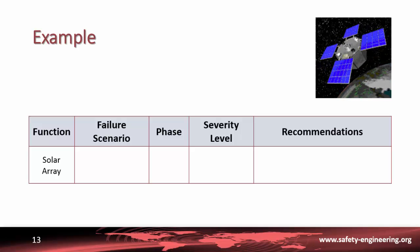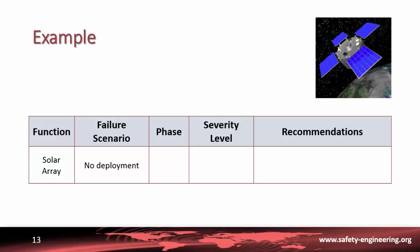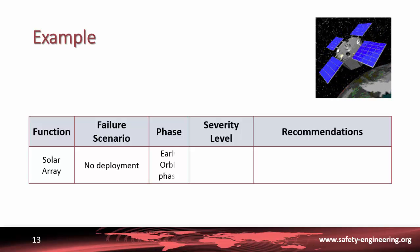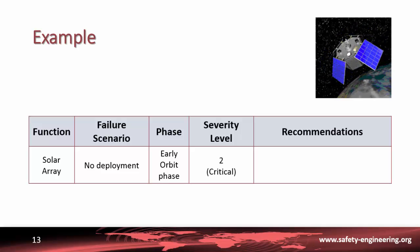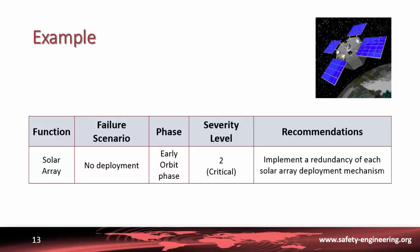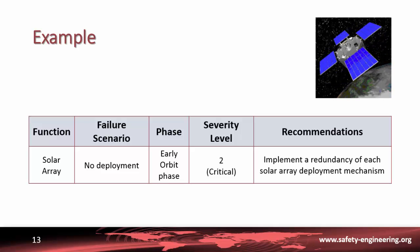A possible failure scenario could be the no deployment of the solar array during early orbit phase. This would mean the satellite would not be able to perform its functions, leading to the loss of the mission, which corresponds to a severity level of 2, that is critical. We could suggest implementing a redundancy of each solar array pyrotechnic deployment mechanism.